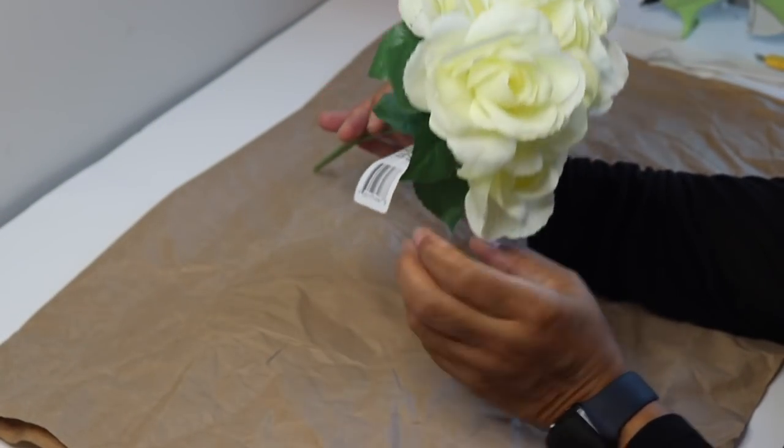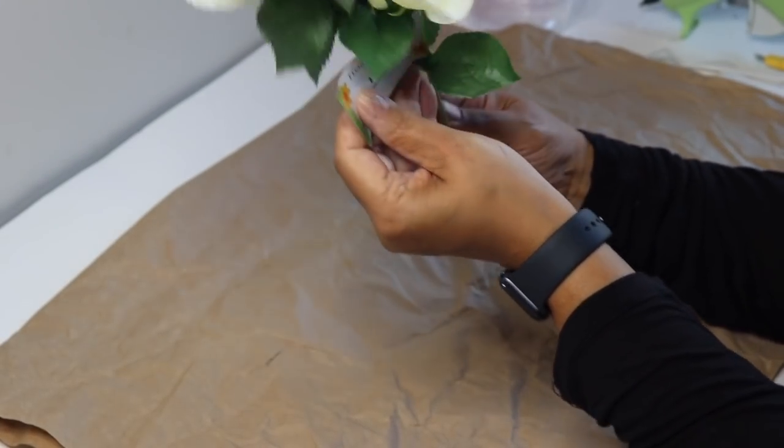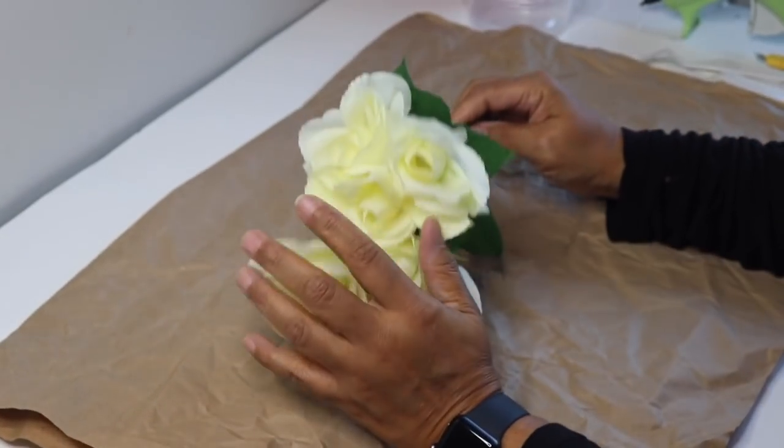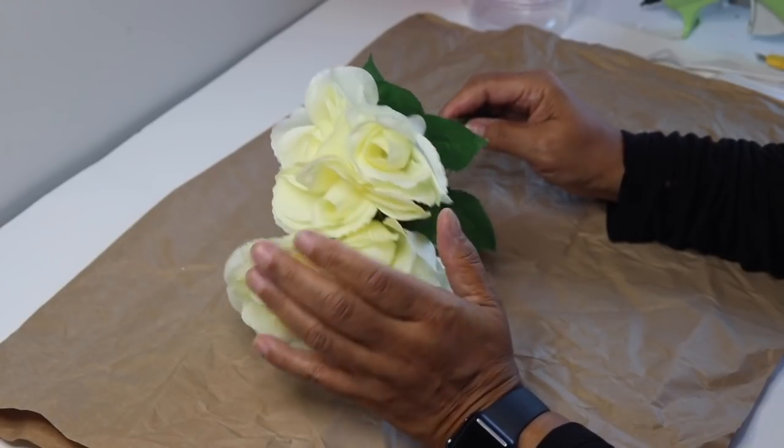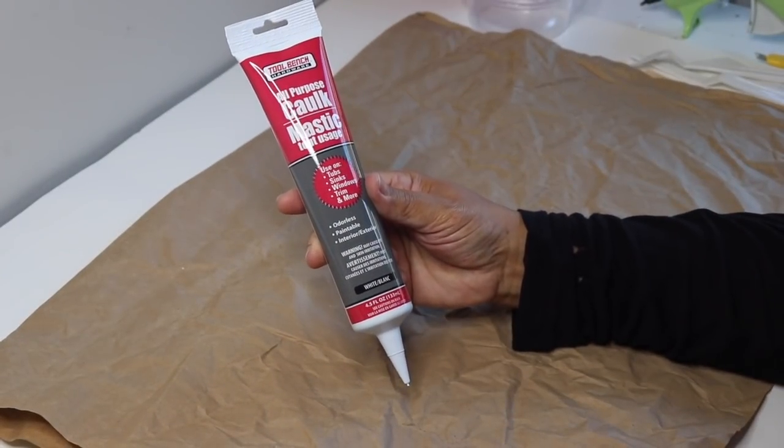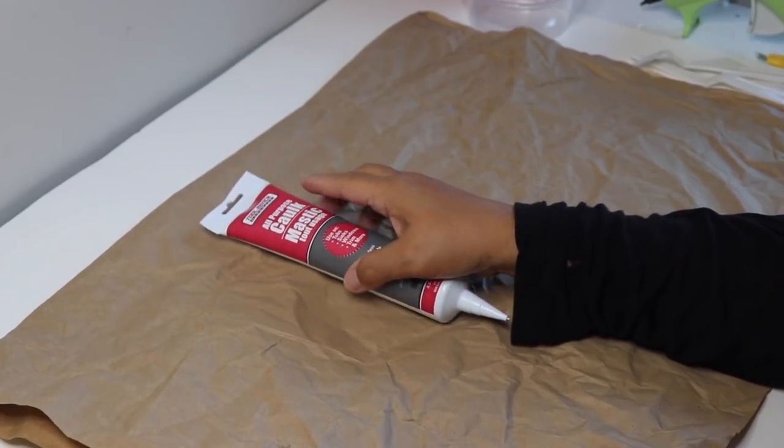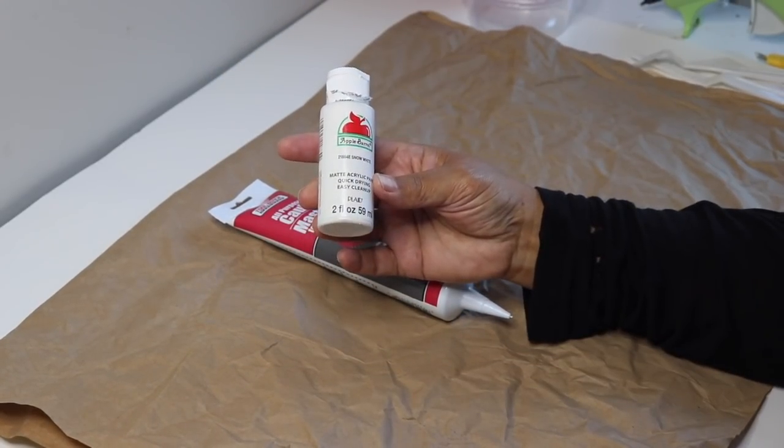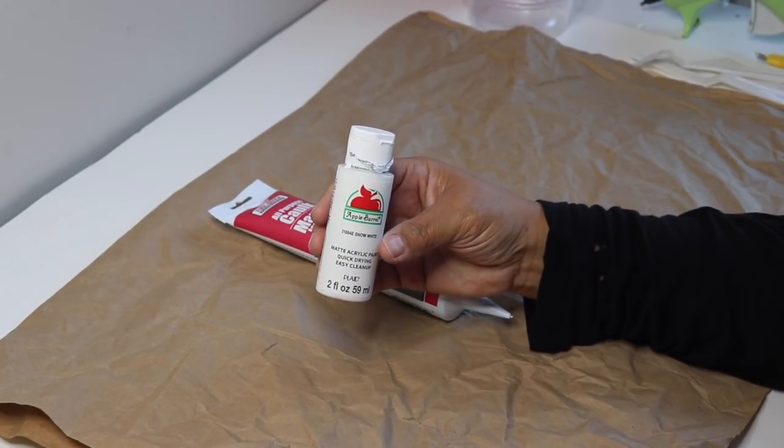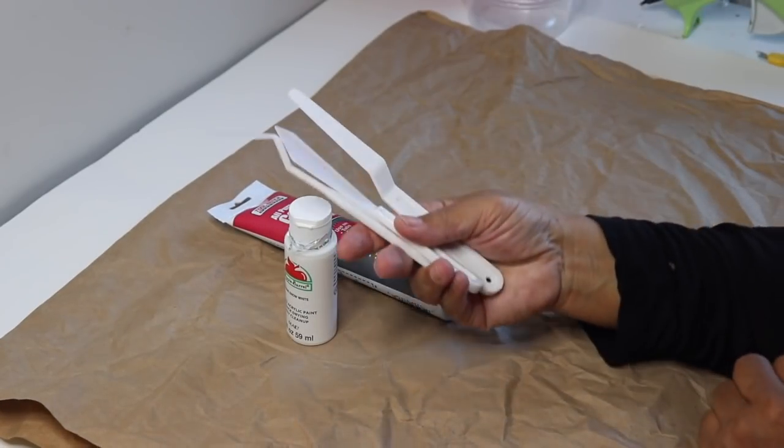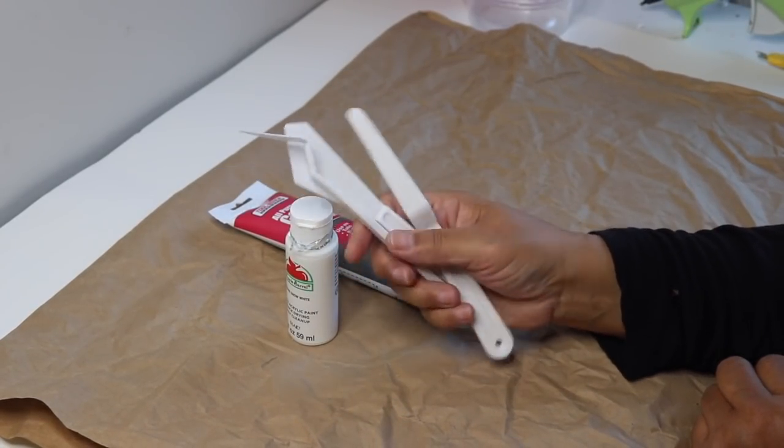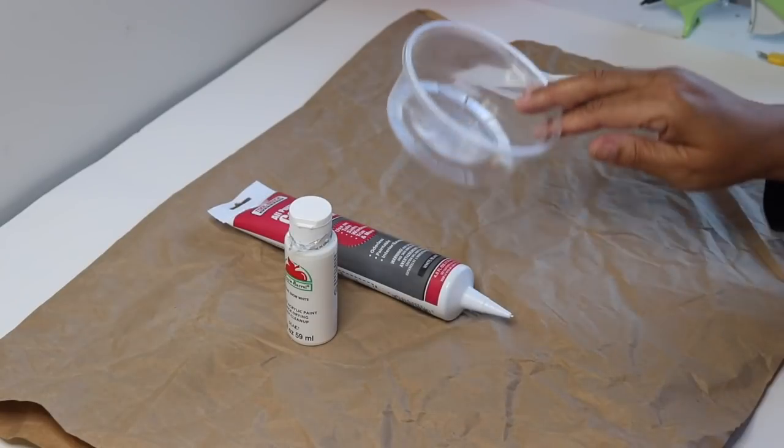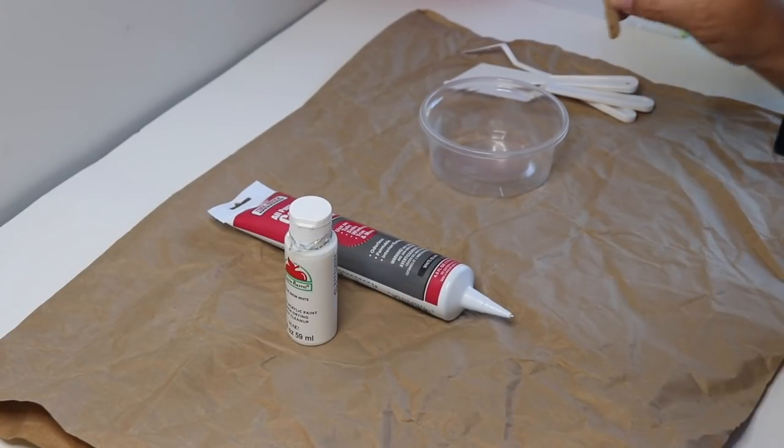Alright, let's get started. Here I have a bouquet of the Dollar Tree roses. I would prefer them in white but they didn't have any. I have some more Dollar Tree caulk that I used in a previous DIY. I have this white acrylic paint from Walmart for 50 cents, plus these spatula tool things, a disposable plastic bowl, and a popsicle stick.